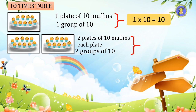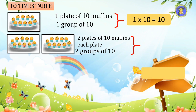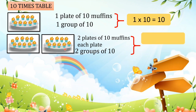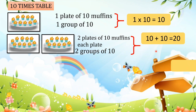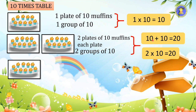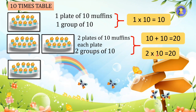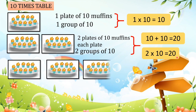Now we see two plates of ten muffins in each plate, so that means two groups of ten. How many muffins altogether? We can find the total by addition: ten plus ten equals twenty. Or we can use multiplication: two times ten equals twenty.